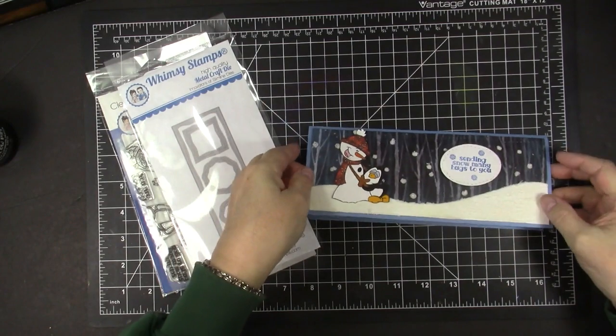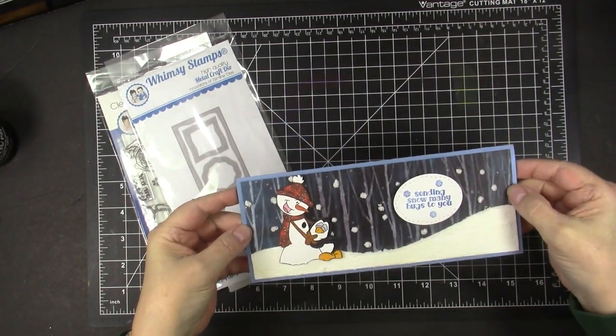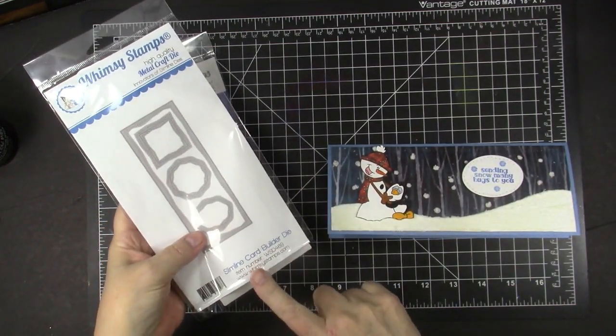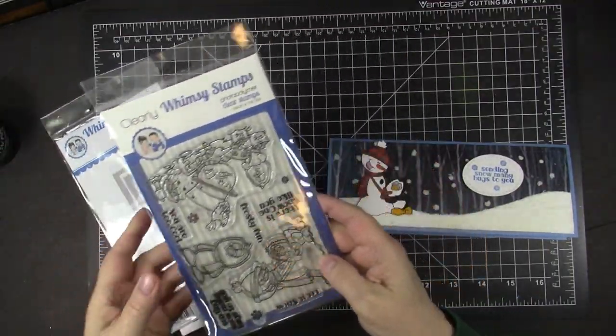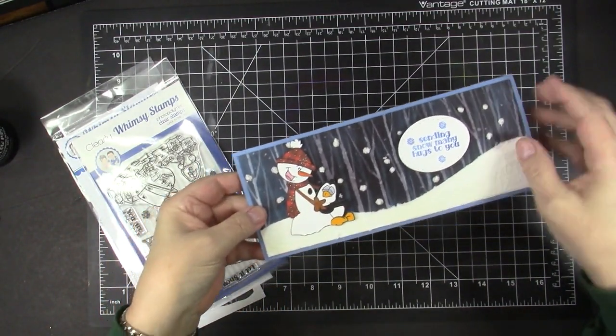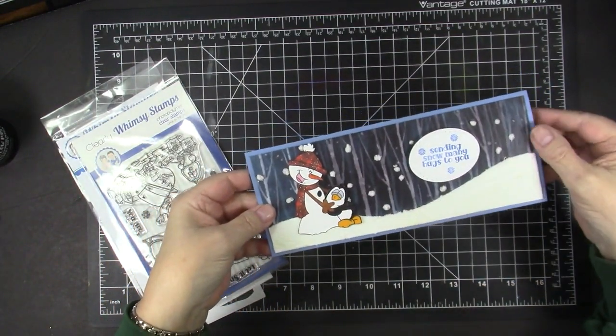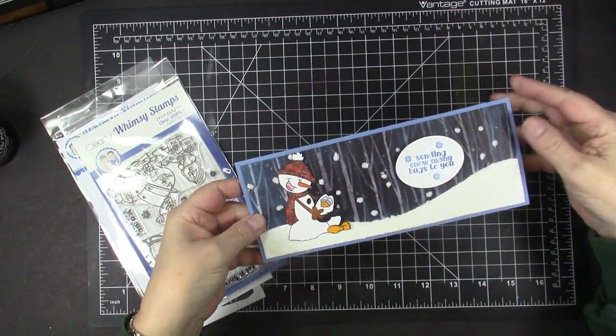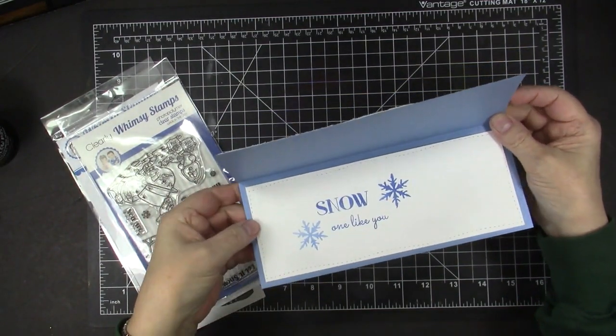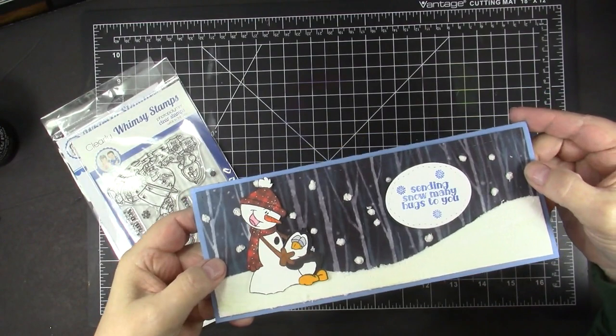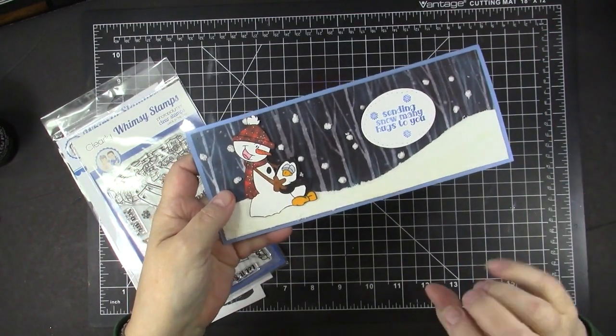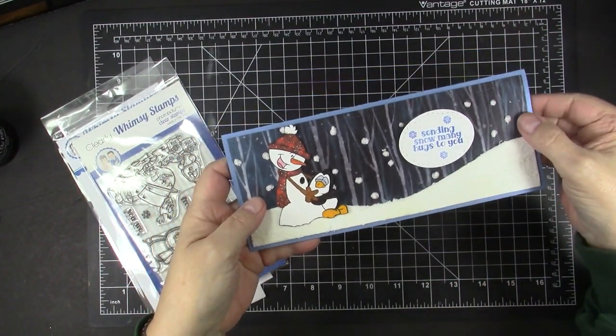My first slimline card is a Snowy Hugs card that features this Whimsy Stamps Slimline Die Builder and this Frosty Hugs stamp set. You have this really cute little hugging couple there sending Snowmany Hugs to you and on the inside I stamped Snow Unlike You with a couple more snowflakes. Can you see the snow on this card? Doesn't it look real? I'm going to show you how easy it is to achieve that effect.